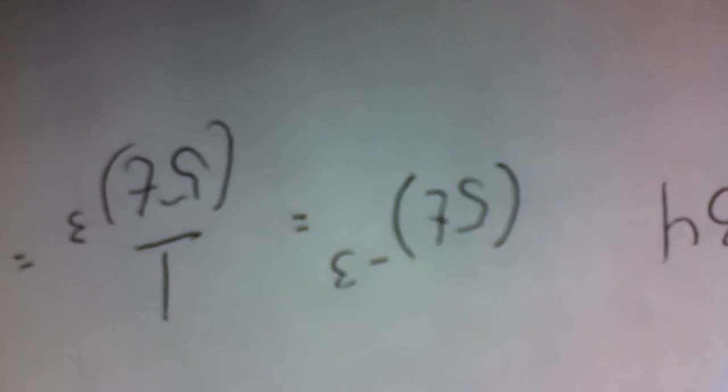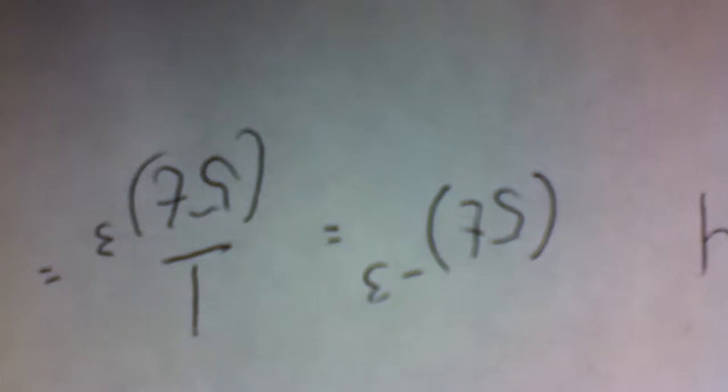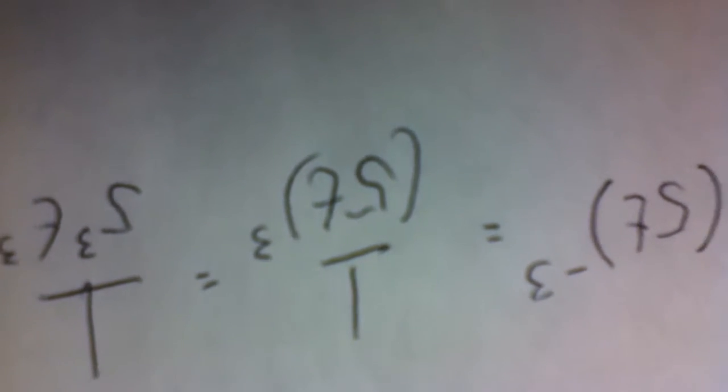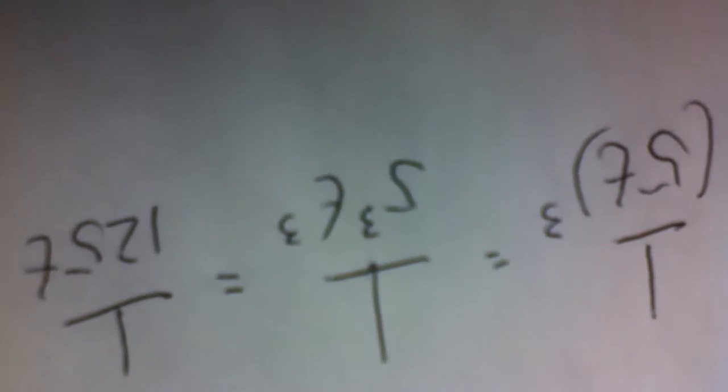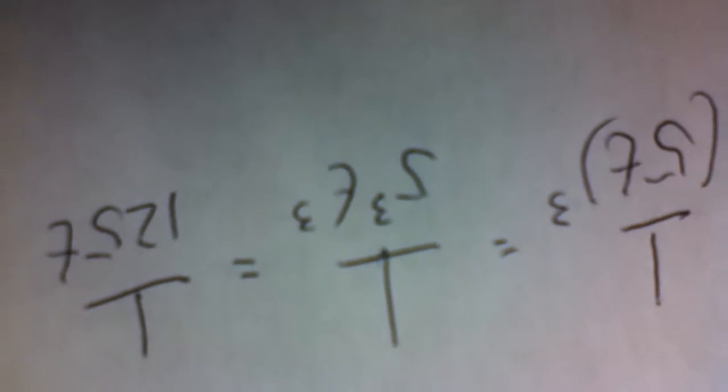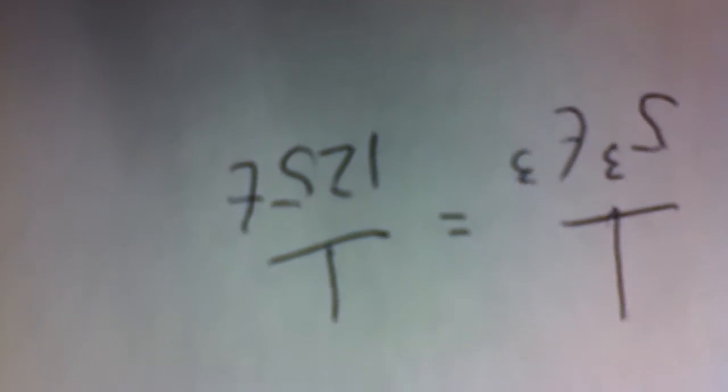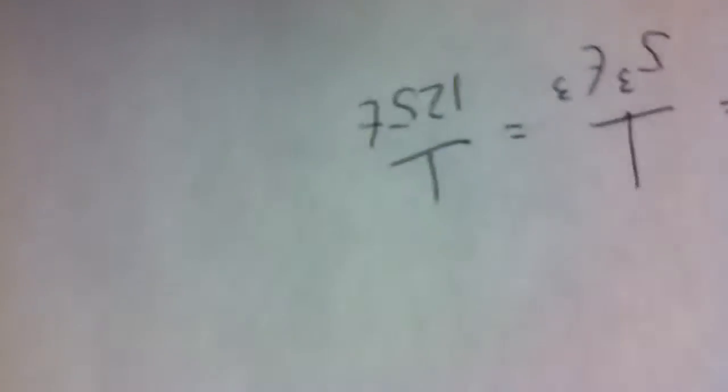5t all raised to the negative 3. Simply put 5t in the denominator and then make it positive 3. And that is 5 to the 3rd times t to the 3rd or 125 times t to the 3rd.